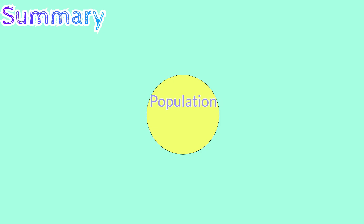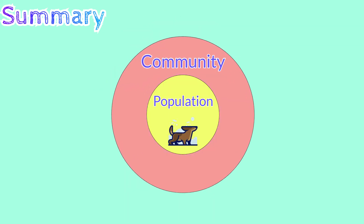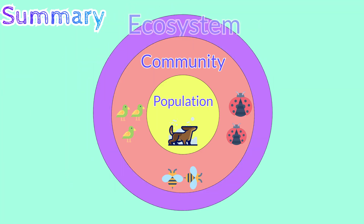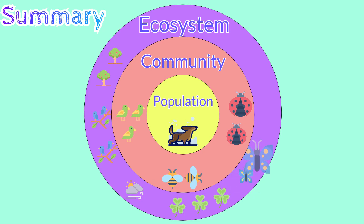In summary, a population refers to one species. A community is made up of two or more species. An ecosystem is defined as all living organisms and their interactions with an environment.